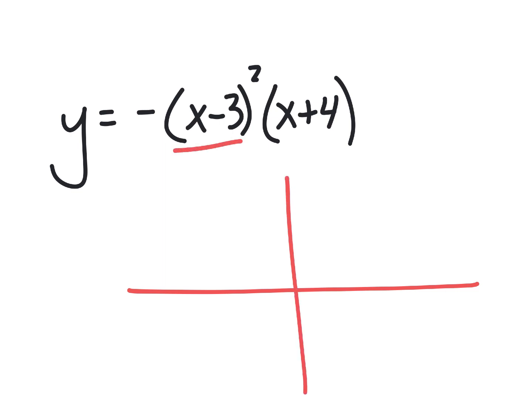So how about a little more complicated one? Well, the fact that this one's already factored is going to mean that I know a lot more about it. I know that this one goes through negative, nope, sorry, positive 3, because positive 3 would be a zero here, would make this part zero.